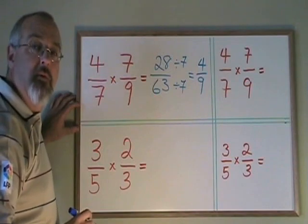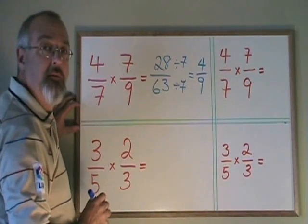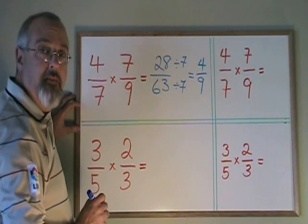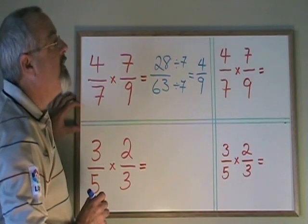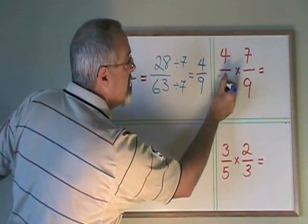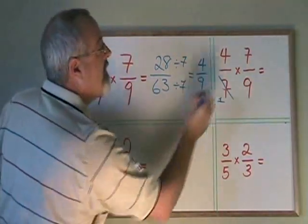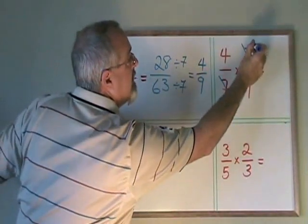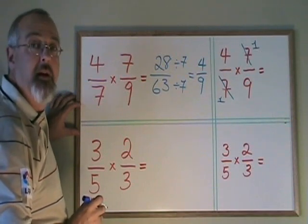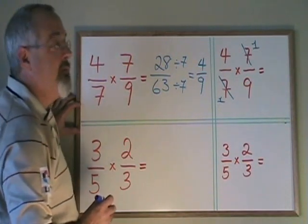Now let's try doing the same question again with canceling. We have the same question and we can see that there is a 7 on the top and a 7 on the bottom. Because both top and bottom have a 7, we can cancel. We're dividing the bottom by 7 and that gives us a 1, and we're dividing the top by 7 and that gives us a 1. We put a line through the number we are canceling so we can remember we don't have that number there anymore. The 7s have been replaced by 1s.